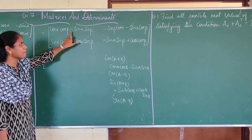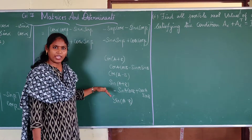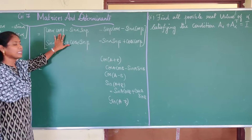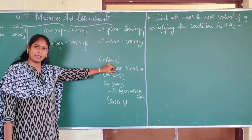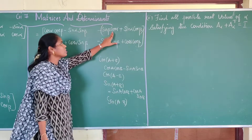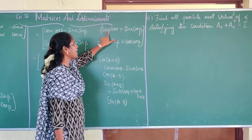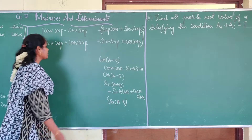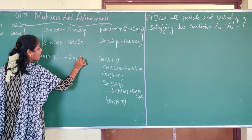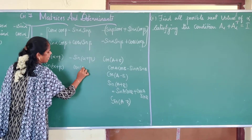You will use these compound angle formulas to replace the values in this matrix. So first: cos α · cos β minus sin α · sin β is nothing but cos(α + β). And here sin α · cos β plus cos α · sin β — taking the minus sign out — gives minus sin(α + β) for the (1,2) entry. So I can write this as: cos(α+β), minus sin(α+β); sin(α+β), cos(α+β).